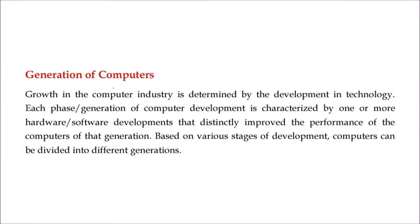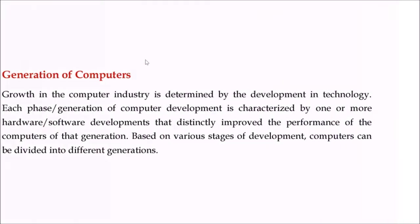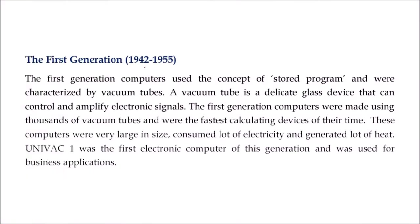Now we will look at the generations of computers. Each generation is characterized by some hardware or software development that gave a paradigm shift, or an immense improvement in the performance of computers. Based on these stages, computers can be divided into different generations. The first generation spans 1942 to 1955.